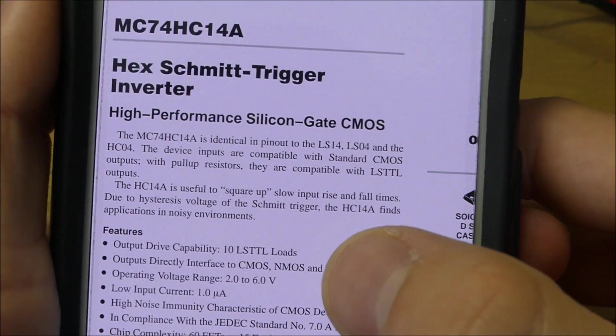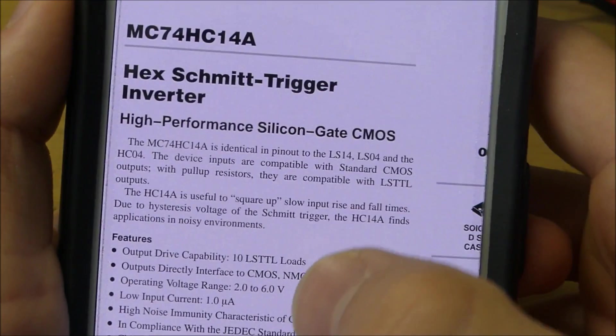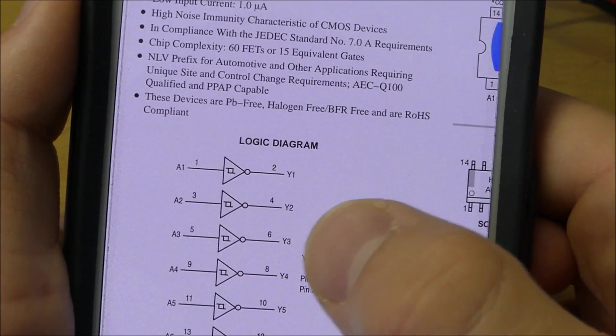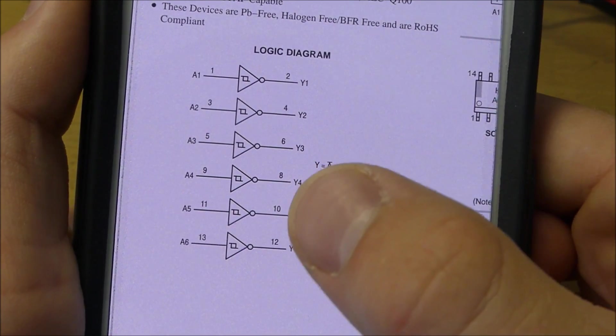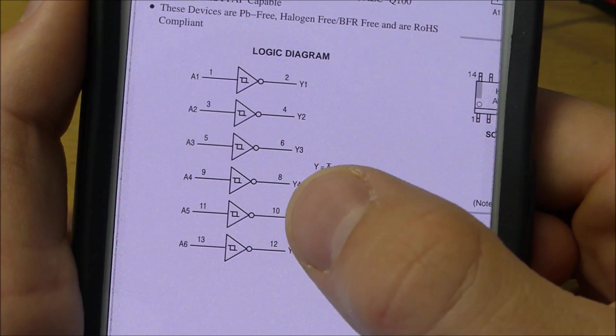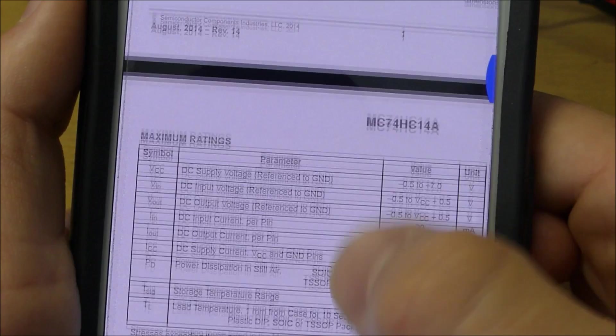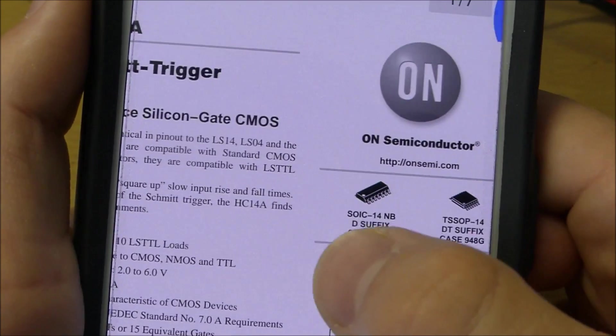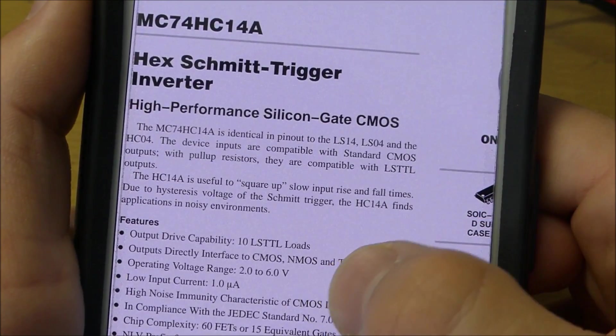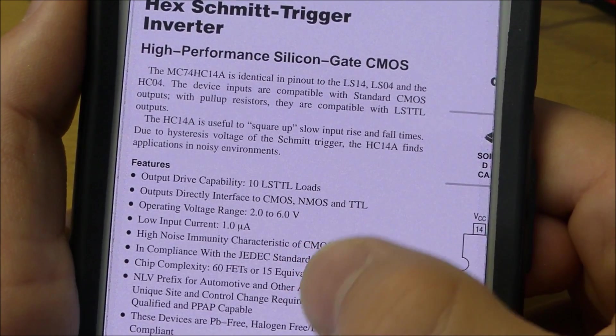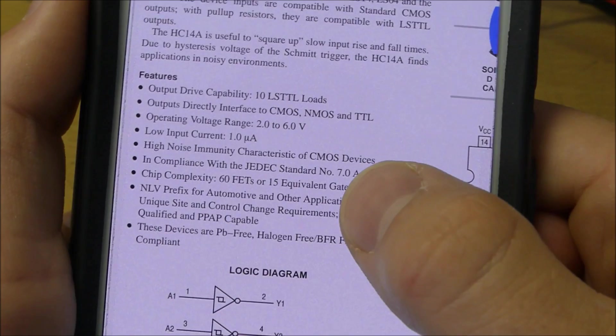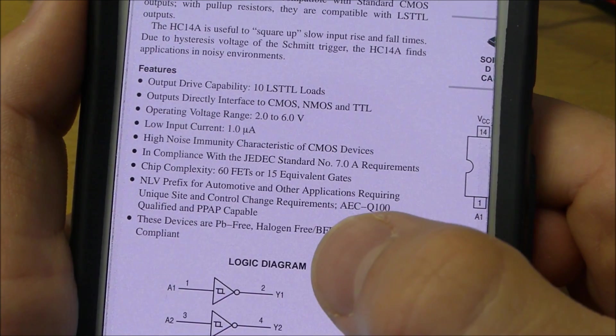With our little datasheet, we can see that it's a Hex Schmitt trigger inverter, which means that there are six Schmitt triggers. But of course, since we only have five potentiometers and five capacitors, then we're only using five of the six Schmitt triggers. It says that this is a CMOS device, which means that it's very efficient on voltages, and it runs on a voltage of anywhere from two to six volts at a low input current of one nanoamp. That's pretty cool.